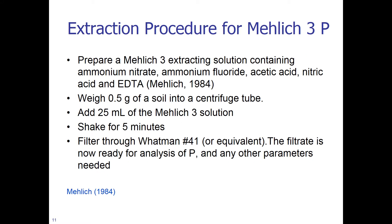For the Mehlich 3 extraction procedure: prepare a Mehlich 3 extracting solution containing ammonium nitrate, ammonium fluoride, acetic acid, nitric acid, and EDTA — ethylenediaminetetraacetic acid. Weigh 0.5 grams of soil into a centrifuge tube, add 25 ml of the Mehlich 3 solution, shake for 5 minutes, and filter through a Whatman number 41 or equivalent pore size filter paper. The filtrate is then ready for analysis of P and any other parameters needed.